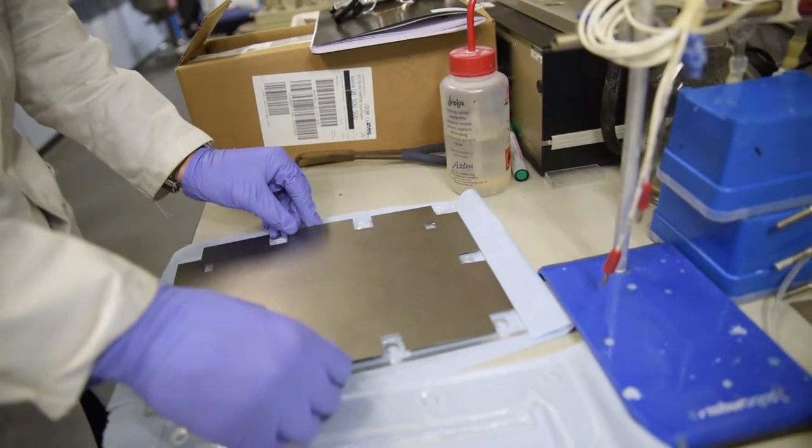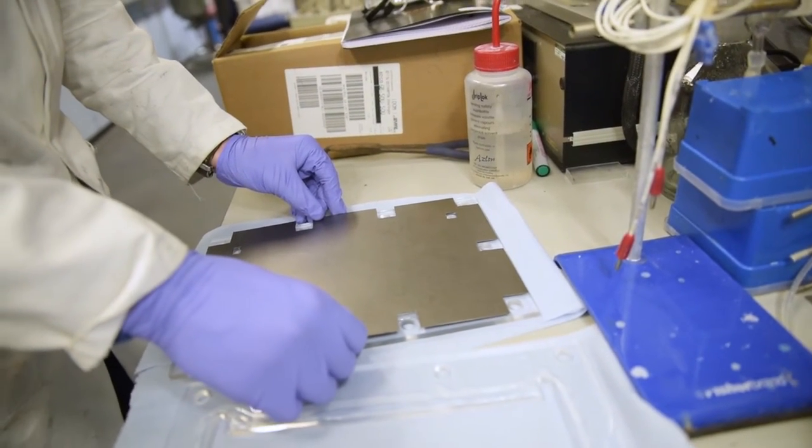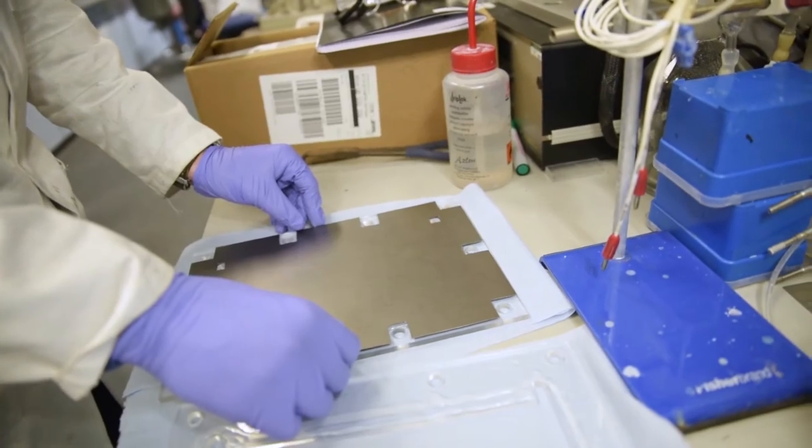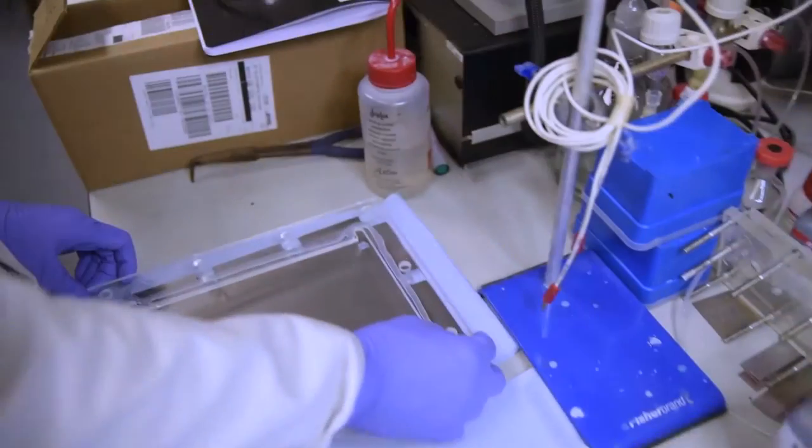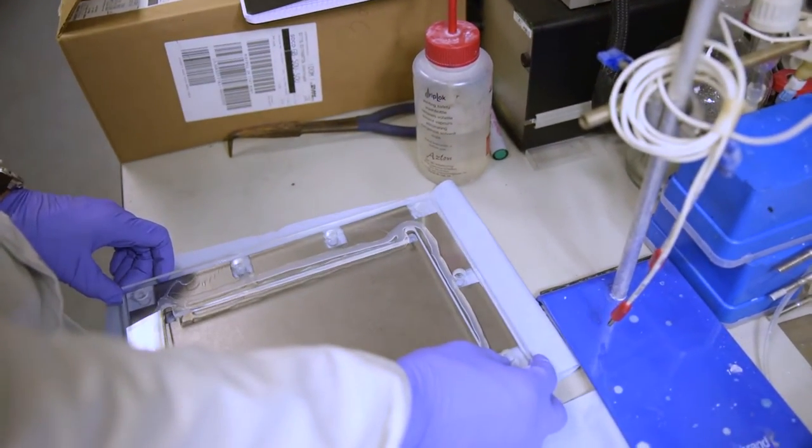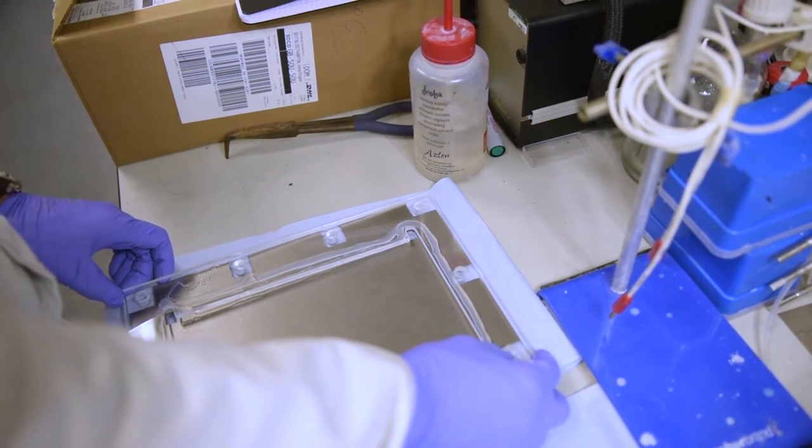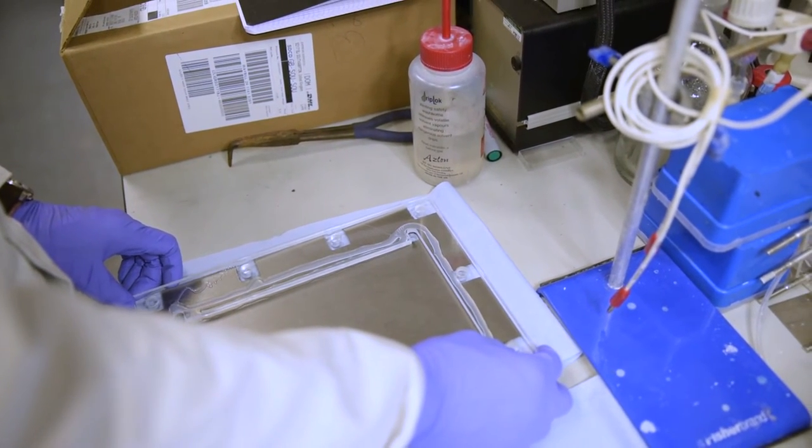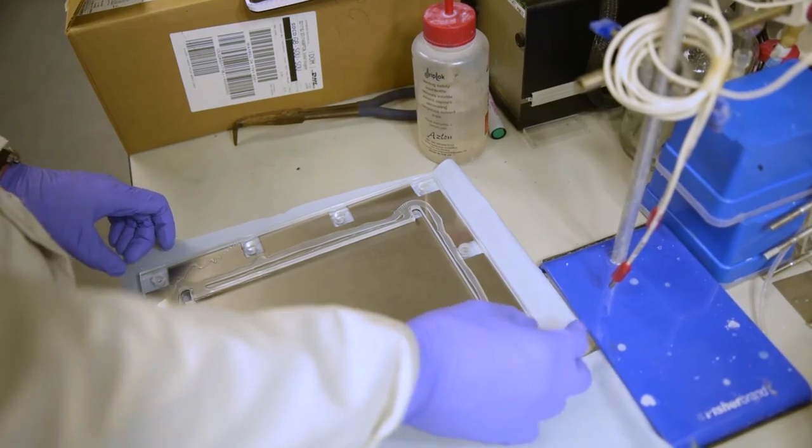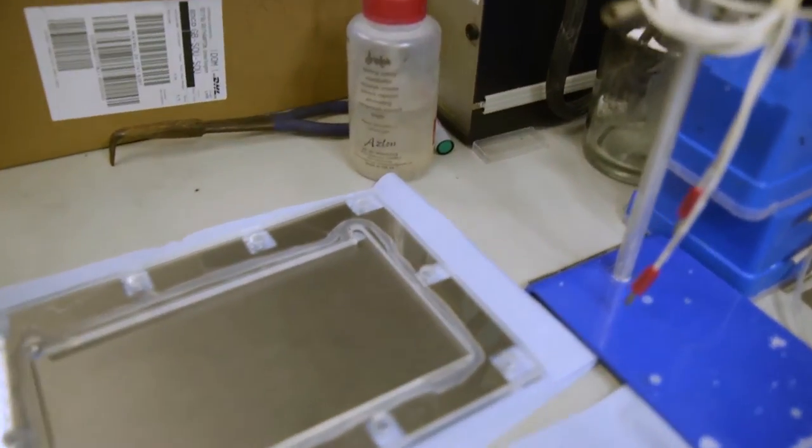When the sealant becomes tacky, the electrodes together with the meshes are sandwiched between two acrylic plates to form an individual cell. The sealant is then left to dry for 24 hours.